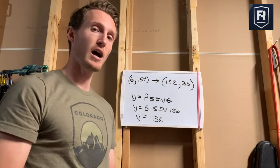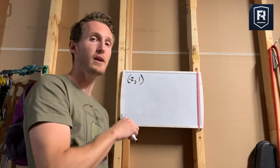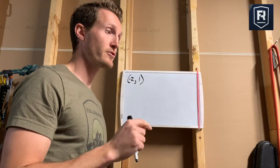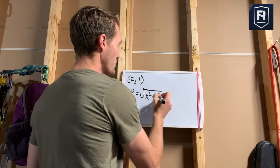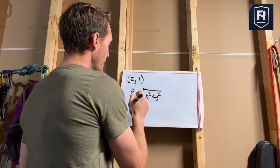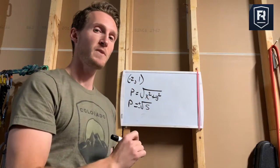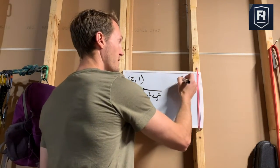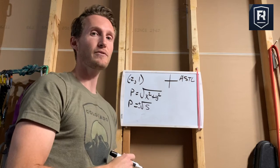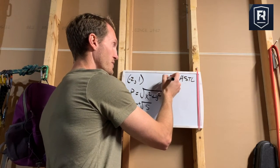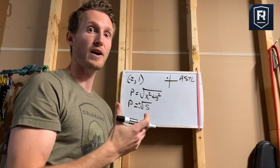Now we'll go the other direction and convert a rectangular coordinate to a polar coordinate. The first thing you're going to do is grab the right equation: ρ = √(x² + y²). So we're going to find our ρ value — for the point (-2, 1), it's going to be √(4 + 1), so √5. Of course, there's a plus or minus in front of that. When you see that plus or minus, that should lead you to an ASTC analysis and a little sketch. The point (-2, 1) is negative 2 in x, up 1, so it's in the second quadrant.